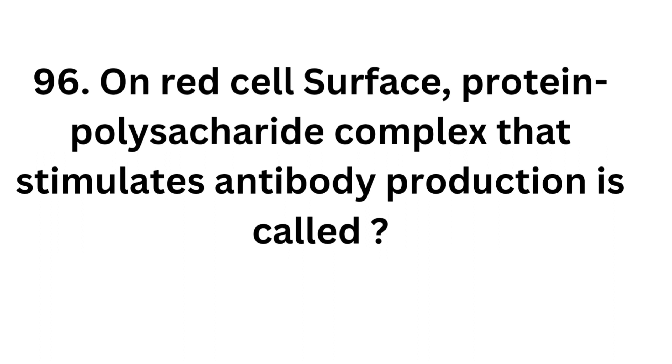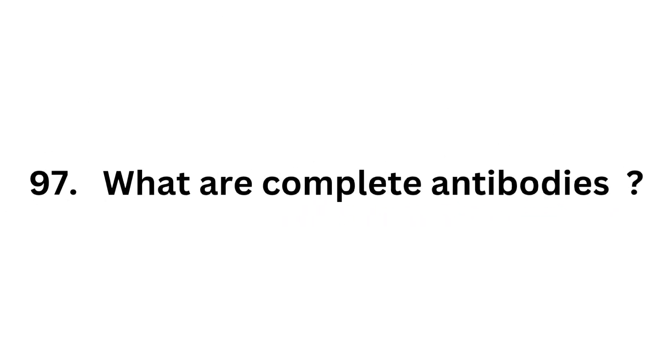Question number 96: On the red cell surface, the protein-polysaccharide complex that stimulates antibody production is called a blood group antigen. That means blood group antigens are protein-polysaccharide complexes that stimulate antibody production and are present on the surface of red cells.